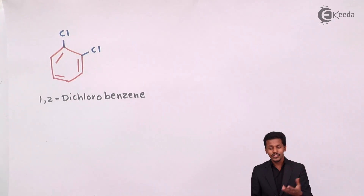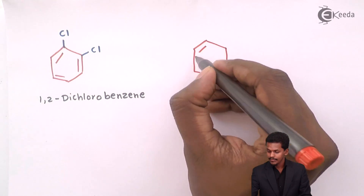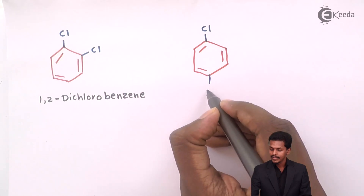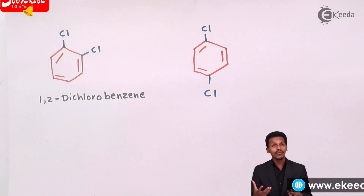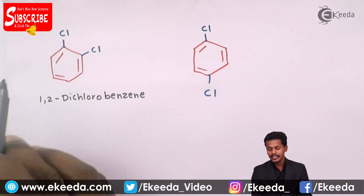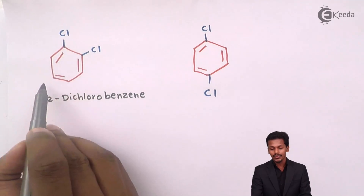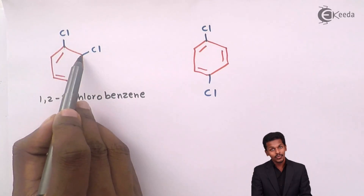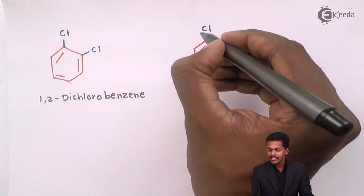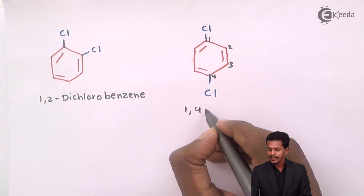There is another possibility where we could get a substitution where the chlorine atom is present on different positions. When giving the IUPAC name, we number the chlorine atoms such that the next chlorine also gets the least number. So we number the carbon atoms one through six. This molecule has carbon number one, two, three, four — and according to IUPAC nomenclature, the name of this one is 1,4-dichlorobenzene.